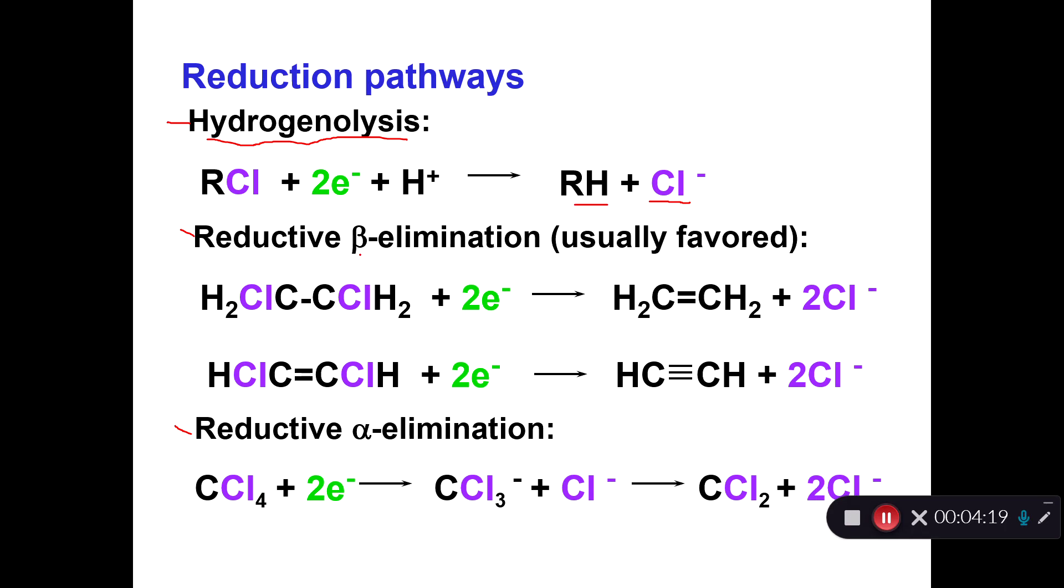Then you have reductive elimination, and the beta means this is the alpha carbon, and this is the beta carbon. You have chlorines on one on the alpha carbon, one on the beta carbon. If you add two electrons here, you can form the double bond and kick out two chlorides. Here you need two electrons just to get rid of one chloride. For the price of two electrons, you get rid of two chlorines. That's favorable from our point of view. We want to get rid of the chlorine, because generally speaking, if you can get rid of the chlorine, you can make the compound less toxic.